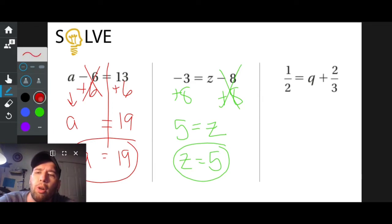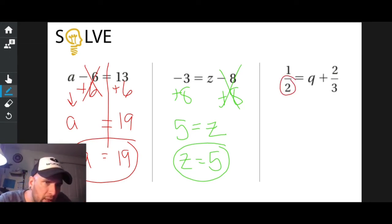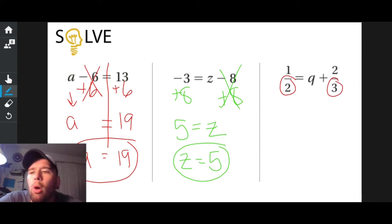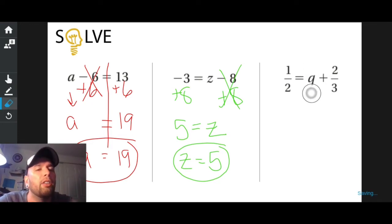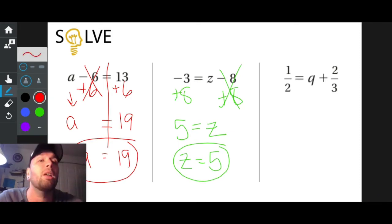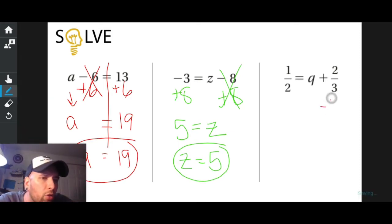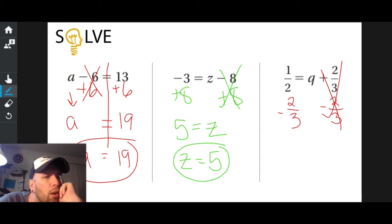Let's take a look at this Q problem. Fractions — nobody likes fractions. Look at the denominators. What do you notice immediately? They're not the same. Also, what do I notice immediately? Q. Is Q all by itself? No. What's in the way? Positive two-thirds. What do I do when I have a positive two-thirds in the way? I subtract two-thirds. I crossed those out. Now what I have is one-half minus two-thirds.